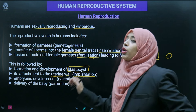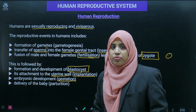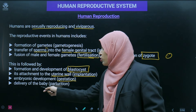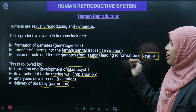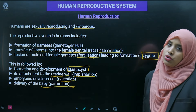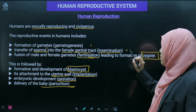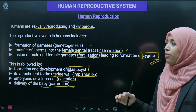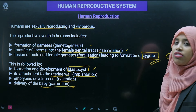After implantation, embryonic development occurs — the embryo develops in a process called gestation. Finally, the delivery of the baby takes place, which is known as parturition. In this chapter, we will study all these events: gametogenesis, insemination, fertilization, zygote development, blastocyst formation, implantation, and gestation.